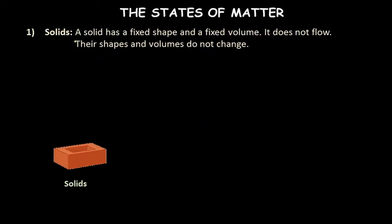Let's start with the first state of matter: solids. A solid has a fixed shape and a fixed volume. It does not flow, and its shape and volume do not change. For example, a brick, your pen, pencil, notebook, PC, laptop, or phone — all have a fixed shape. These are solid matter, the first state of matter.